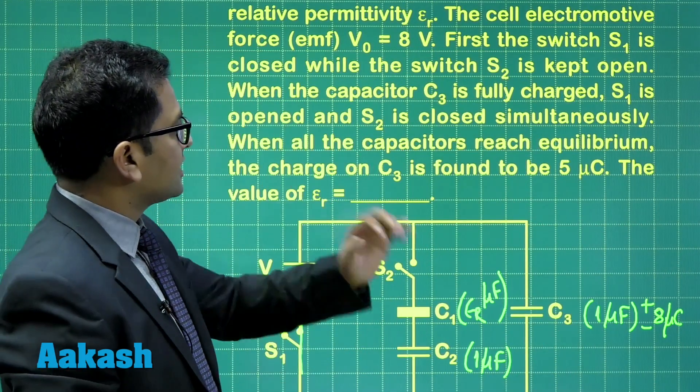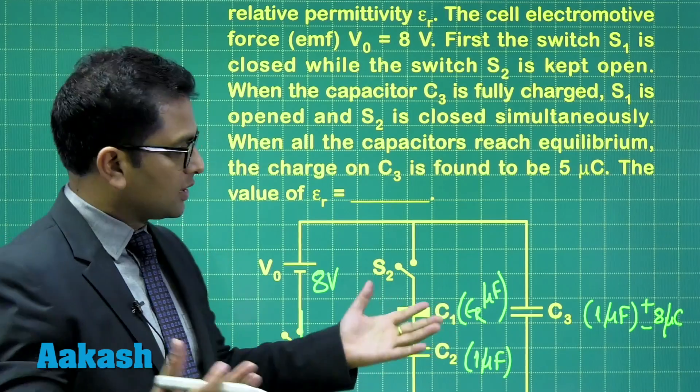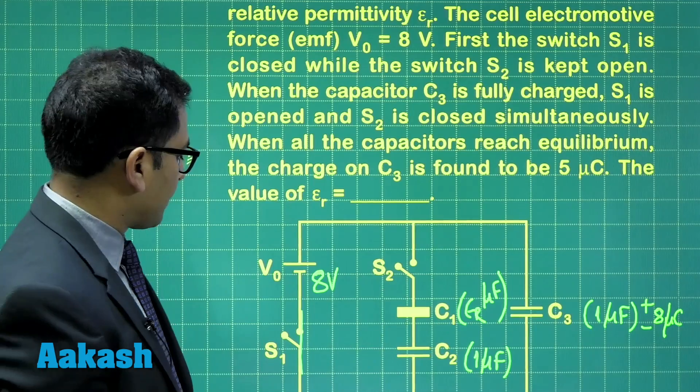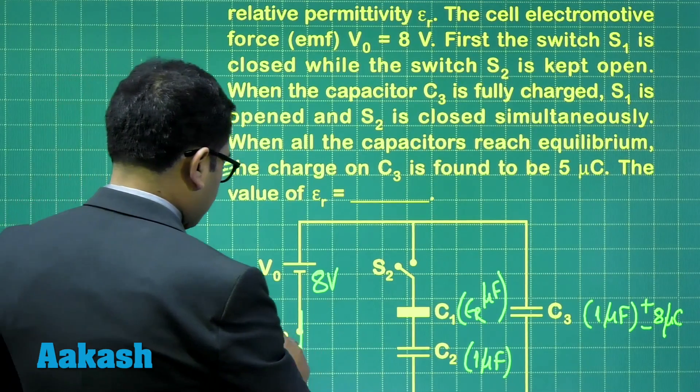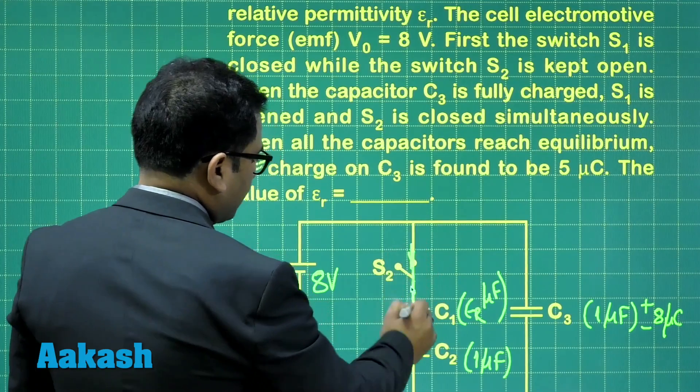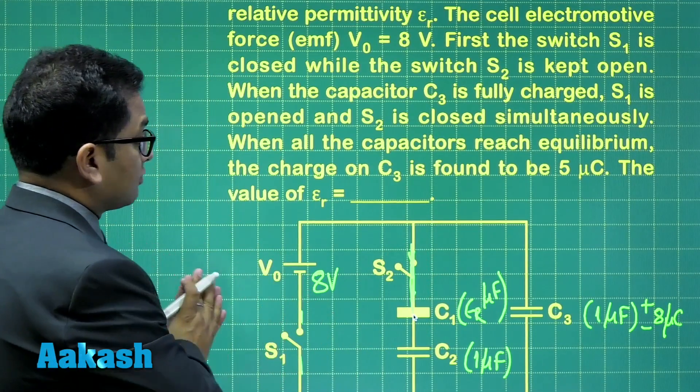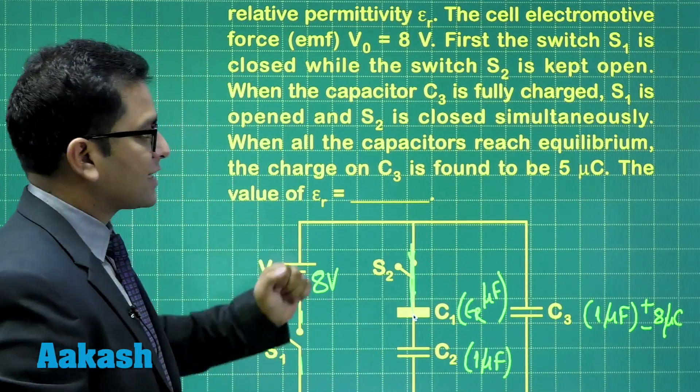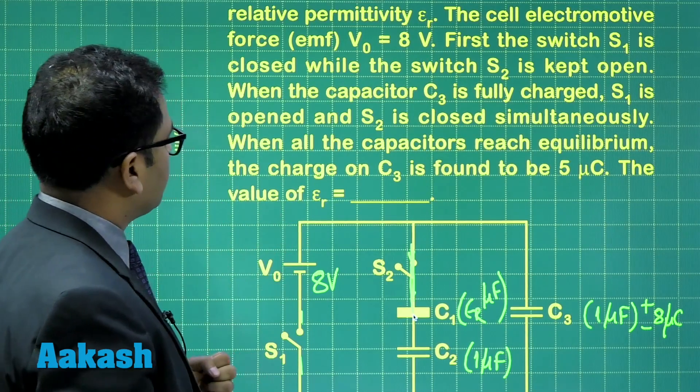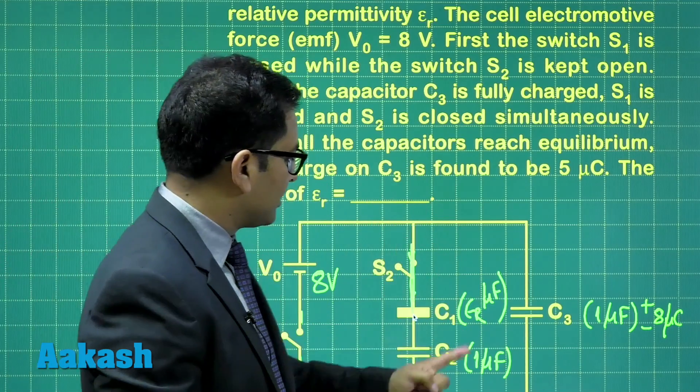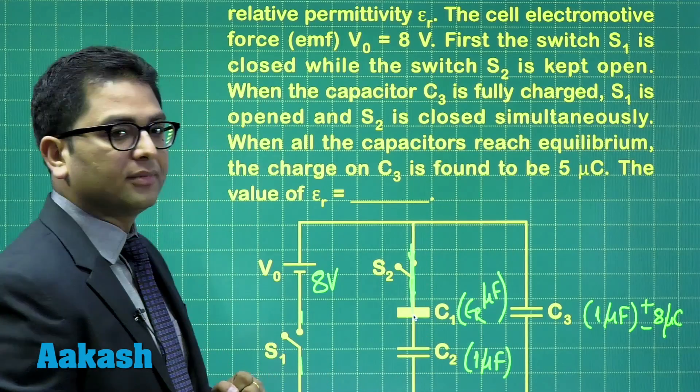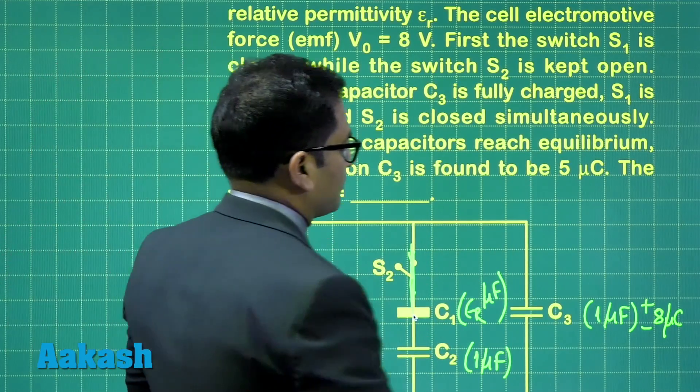When the capacitor C3 is fully charged, that's what, when it gets 8 microcoulomb, S1 is open and S2 is closed simultaneously. So S1 is open and S2 is closed simultaneously. Now, the battery can do nothing because this branch has been open. When all the capacitors reach equilibrium, the charge on C3 is found to be 5 microcoulomb. We need to calculate the value of epsilon R.